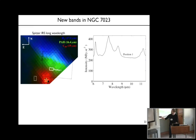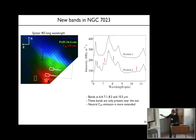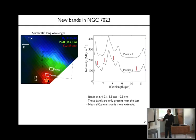If you take a spectrum at position 1, you recognize these bands from PAH molecules. Now if you take a spectrum at position 2—which is really at the edge of the field of view observed with Spitzer, the closest position to the illuminating star—you see a spectrum very similar to the one at position 1, except for a few tiny features indicated with red lines: a band at 6.4 microns, a band at 7.1, a band at 8.3, and another one at 10.5 microns. These bands are present only in the immediate surrounding of the illuminating star, whereas neutral C60 is a little bit more extended.